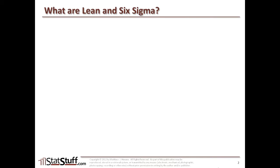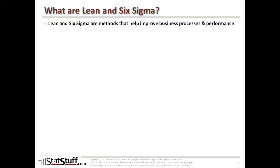First of all, what are Lean and Six Sigma? A basic definition would be that Lean and Six Sigma are both methods that help improve the processes and performance of a business. There are many similarities between Lean and Six Sigma, but what I'd like to show you are the differences between them and how the different perspectives each of them take in relationship to the IPO flow model.